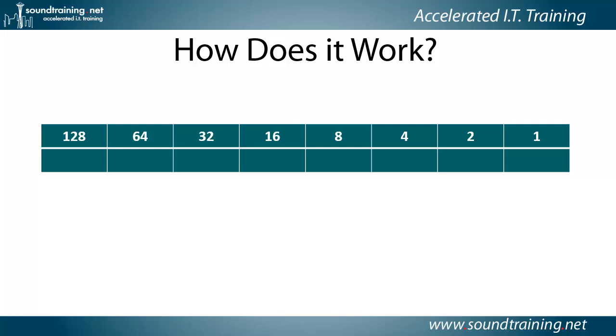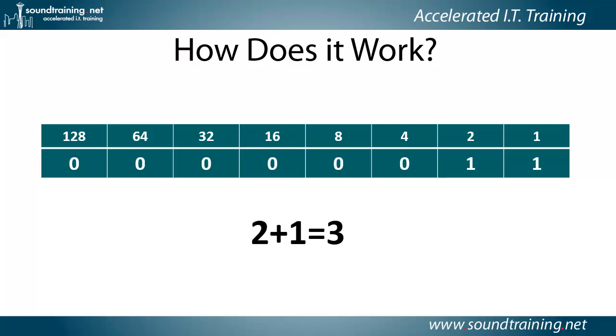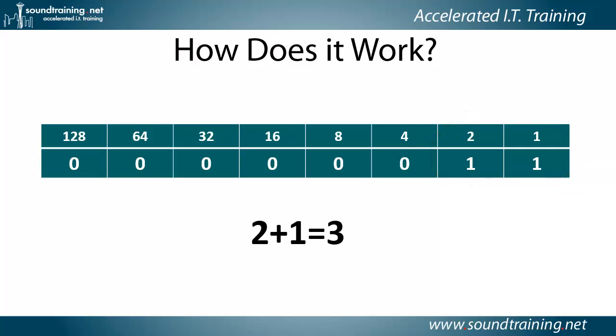Let's take a look at an example. Here the 2-bit and the 1-bit are turned on. We simply add 2 plus 1 and get a byte value of 3, because the 1-bit and the 2-bit are the only bits that are turned on.